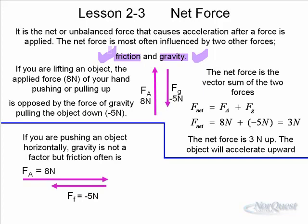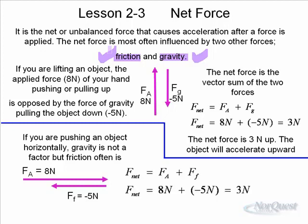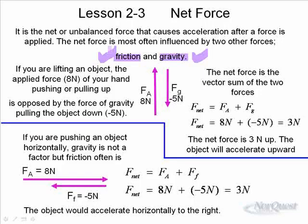Let's say we applied a force of 8 Newtons to the right, and yet because of the interaction between the two surfaces — let's say a book sliding against a table — there is a force of 5 Newtons that opposes your motion. So we would say that the frictional force is negative 5. When you add these two as vectors, 8 Newtons to the right plus 5 Newtons to the left, you end up with a net force. F net is the sum of all forces, and the object would have a net force to the right.